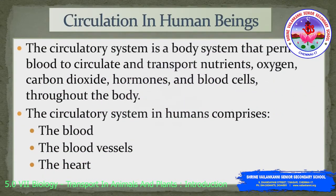Firstly, we will be starting about the circulation in human beings. The circulatory system is a body system that permits blood to circulate and transport nutrients, oxygen, carbon dioxide, hormones, and blood cells throughout the body. The circulatory system in humans comprises of the blood, the blood vessels, and the heart. Now we will be studying each of these parts in detail.